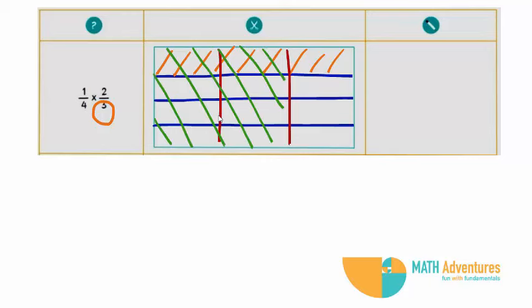Can you identify the region which contains both colors? Does this region denote the product 1 by 4 into 2 by 3? So, can I say 1 fourth into 2 by 3 is nothing but 2 out of 12 parts?